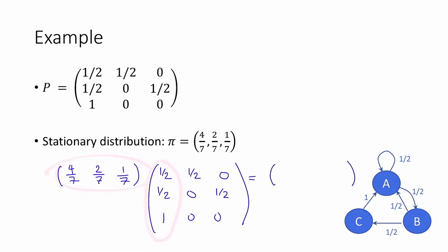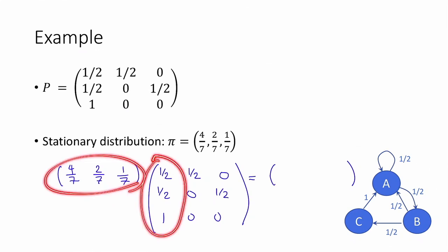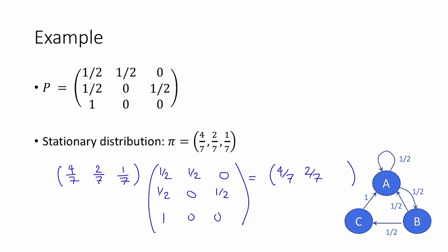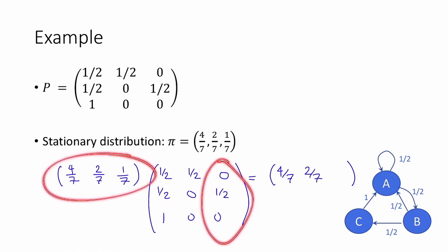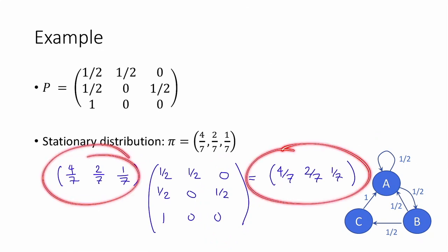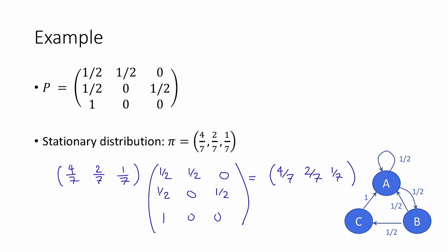Here's a quick example. Consider this chain; its transition matrix looks like this. A stationary distribution is given by pi equal to (4/7, 2/7, 1/7). We can verify this by checking that (4/7, 2/7, 1/7) times this matrix equals itself. The first component gives 2/7 + 1/7 + 1/7 = 4/7, the next component gives 2/7, and the last component gives 1/7 — the same as the original vector. So this is indeed a stationary distribution.